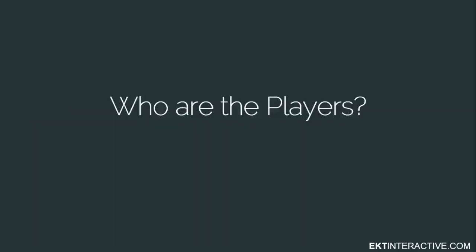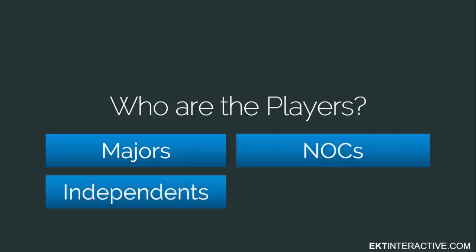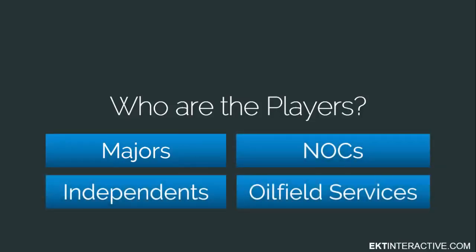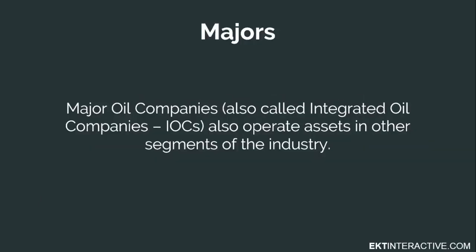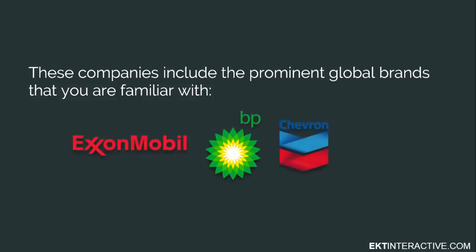So, who are the main players in upstream? The four main categories of participants in the upstream sector are the majors, the NOCs, independents, and oil field services companies. Major oil companies, also called integrated oil companies, also operate assets in other segments of the industry. These companies include the prominent global brands that you are familiar with, including ExxonMobil, BP, Chevron, and Shell.